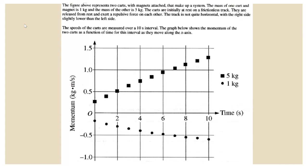The mass of one cart and magnet is one kilogram and the mass of the other is five kilograms. The carts are initially at rest on a frictionless track. They are released from rest and exert a repulsive force on each other. The track is not quite horizontal — the right side is slightly lower than the left side. The speeds of the carts are measured over a 10-second interval, and the graph shows the momentum of the two carts as a function of time as they move along the x-axis.